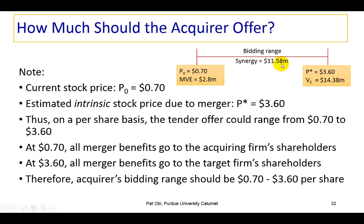The acquirer should not pay more than the estimated intrinsic value of $14.38 million, or $3.60 per share, in order to avoid wealth loss to its stockholders — you don't want to pay more than the firm is worth once acquired. If the amount paid is less than $14.38 million, somewhere within the bidding range, a wealth gain is created for the acquirer's stockholders, because you have paid less than what you believe the firm is worth, and the difference represents value gained.